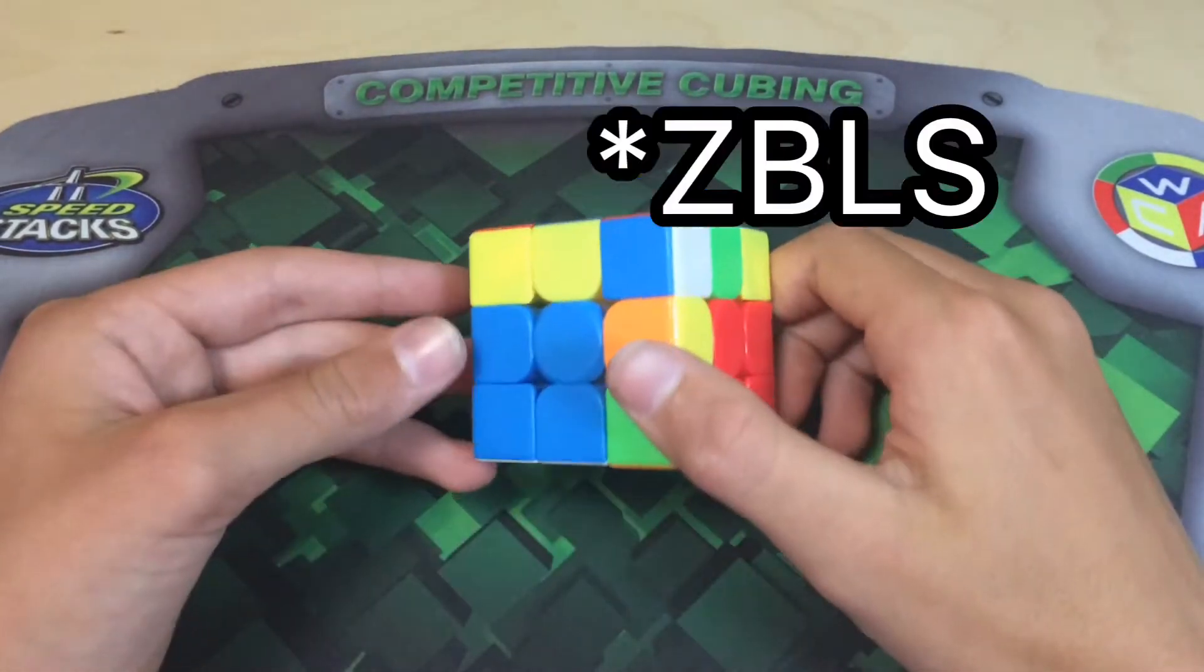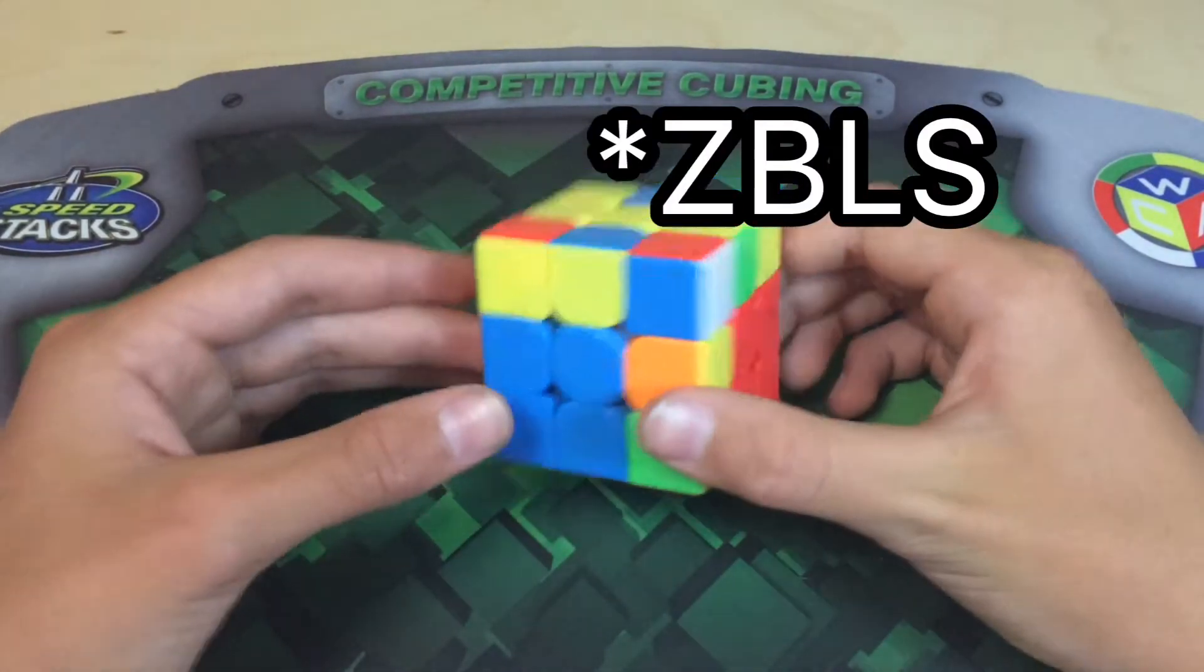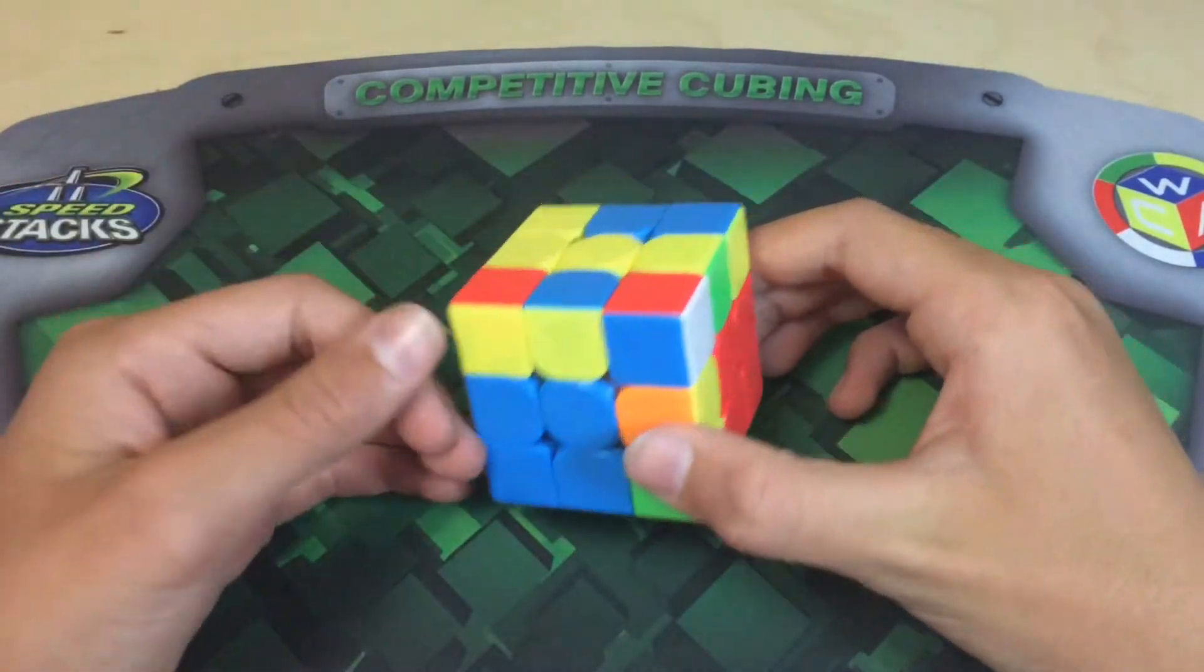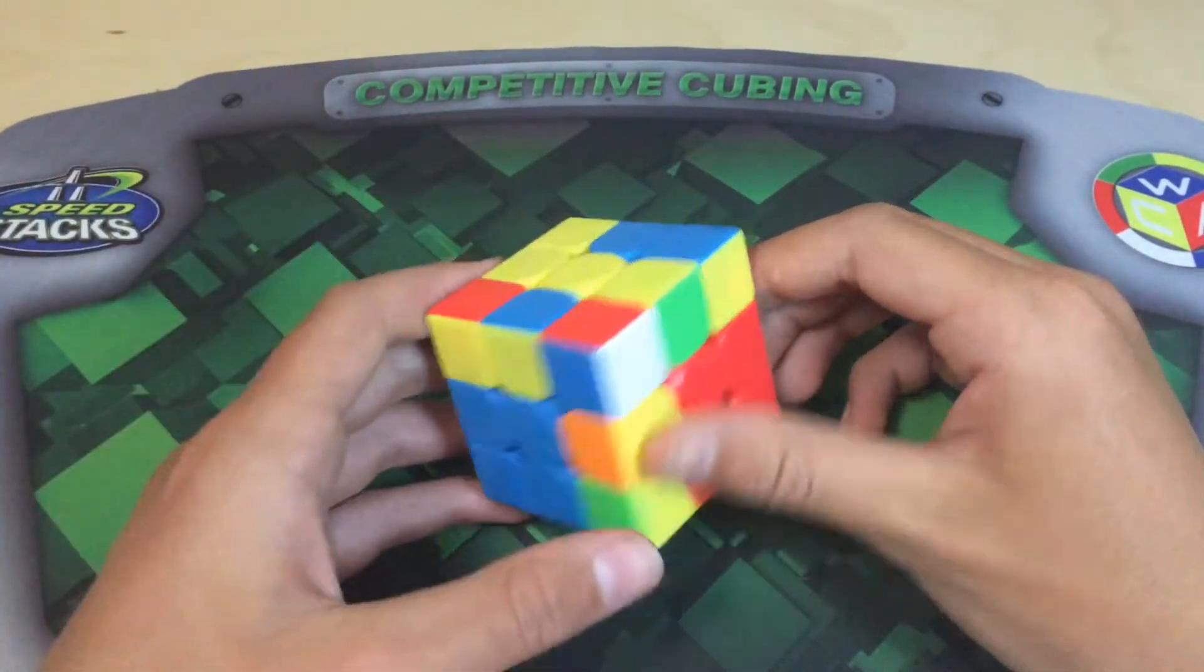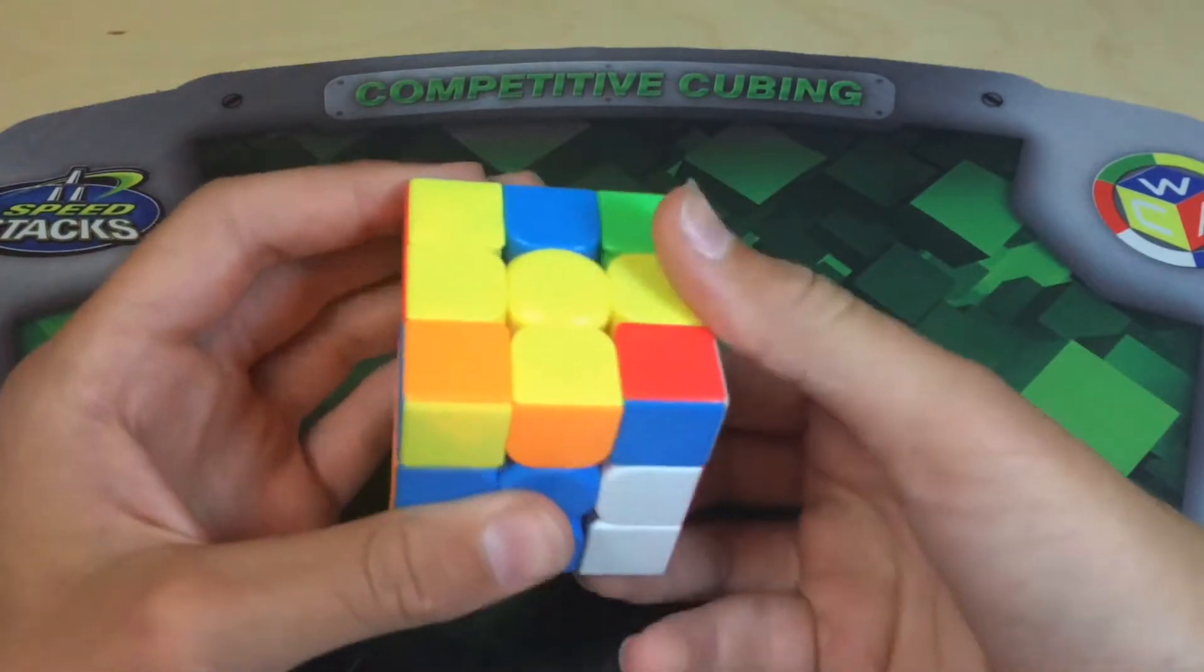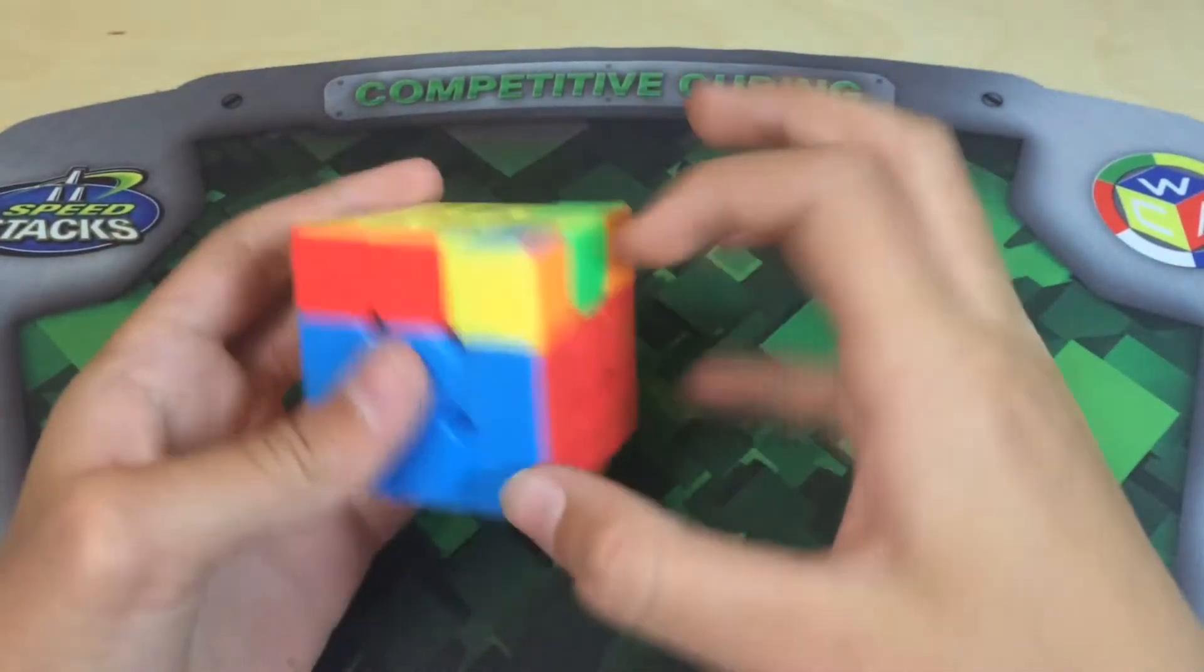In this video I'm going to explain why I think that ZBLS is useless. ZBLS is an algset that is used to orient all of your last layer edges while solving your final F2L case.